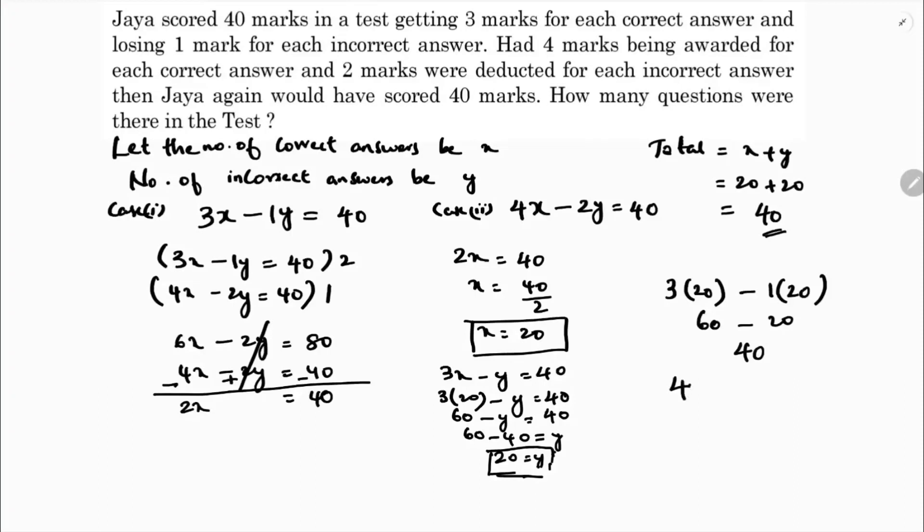If you want, we can check with the second case, 4x minus 2y. 4 into number of correct answers 20, 2 into number of wrong answer that is also 20. So 80 minus 40 which is also 40.